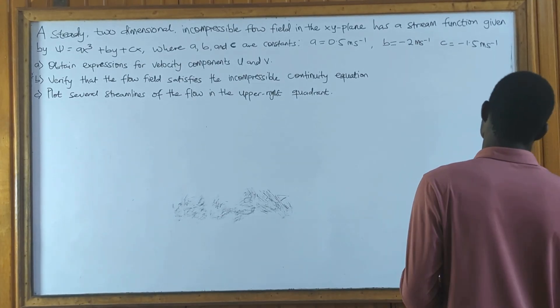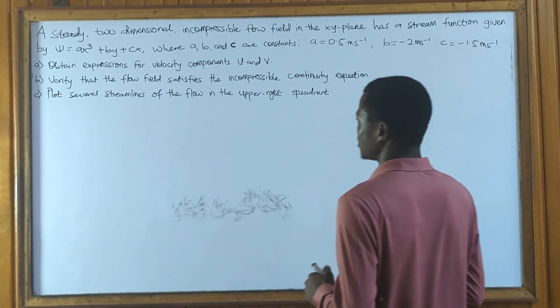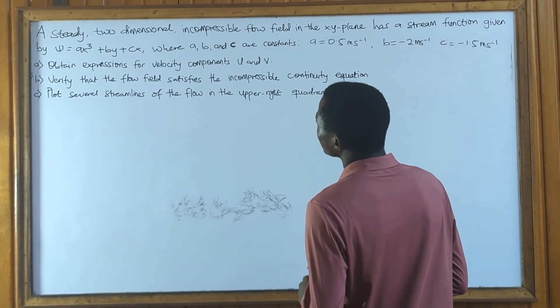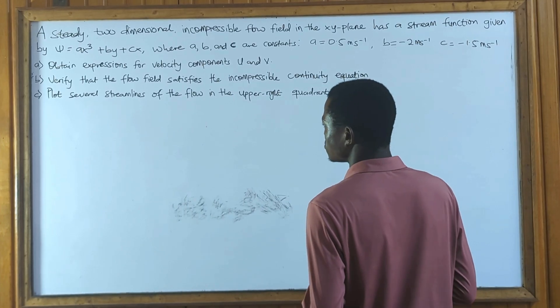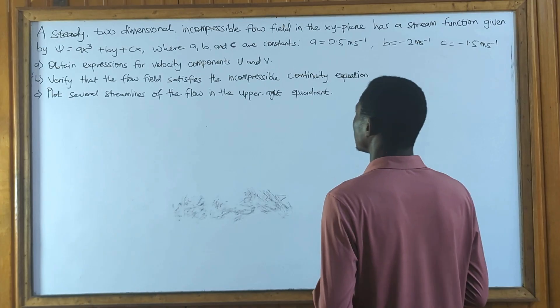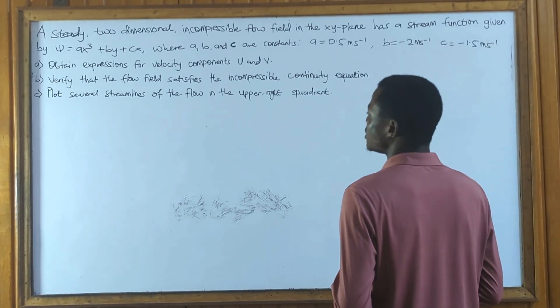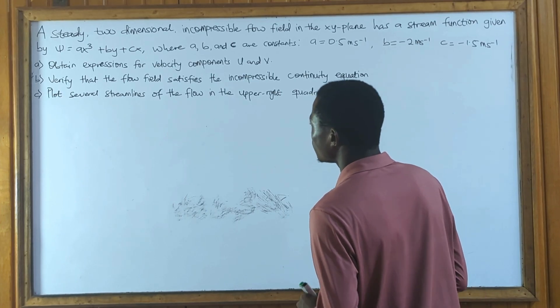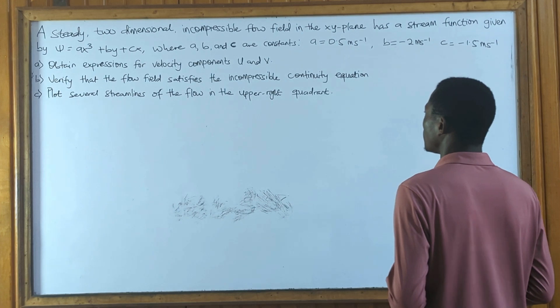c = -1.5 m/s, and we are to obtain the expression for velocity components u and v. Also, we are to verify that the flow field satisfies an incompressible continuity equation, and c, we are to plot several streamlines of the flow in the upper right quadrant.